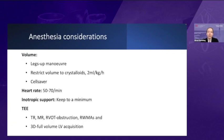Normally for off-pump surgery we like to keep patients full to maintain hemodynamic stability, but unfortunately with these cases we keep them very fluid restricted for two reasons. First, the surgeon needs to operate on a very relaxed heart, so we restrict volume to 2 mL per kilogram per hour. We also use a cell saver. Second, we need the patients to have a very slow heart rate — because the exposure is so small, tachycardia makes it extremely difficult for the surgeon to operate. With a hypovolemic patient requiring a slow heart rate, this can be quite challenging. Short-acting opioids are often your friend, and we also find morphine works quite well.